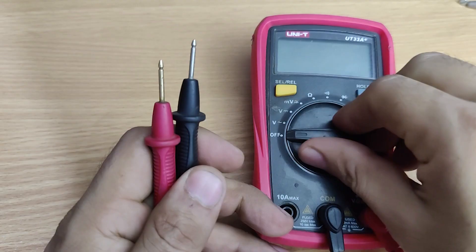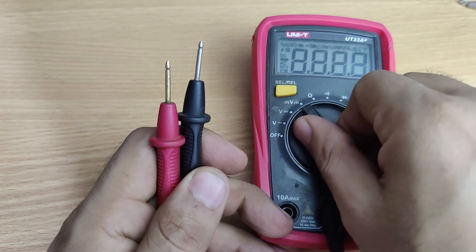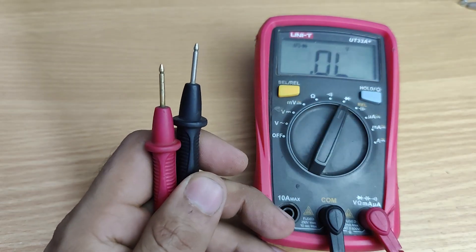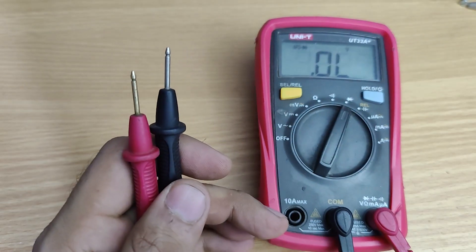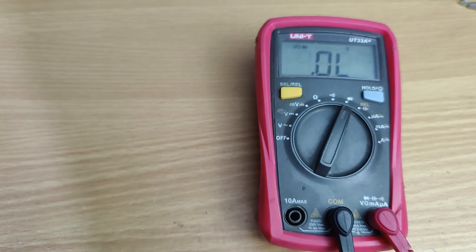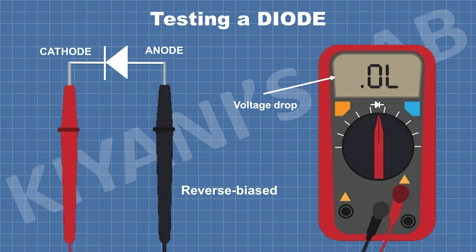Now let's see how we can test the diode. First, set your multimeter to diode mode. On the screen of the multimeter, we will see the voltage drop. If we connect the positive probe of the meter to the cathode of the diode and the negative probe of the meter to the anode of the diode, we will see no voltage drop.